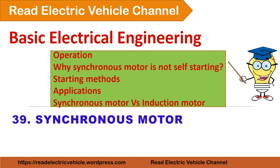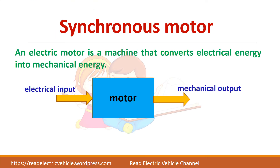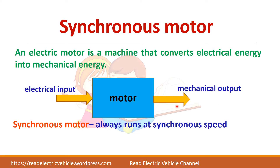In this video we will see about synchronous motor. What is a motor? It is a machine that converts electrical energy into mechanical energy. Synchronous motor is a motor which will always run at synchronous speed. Synchronous speed is given by Ns = 120F / P, where F is the supply frequency and P is the number of poles.